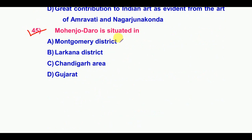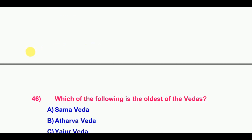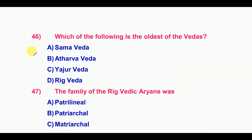Mohenjodaro is situated in which district? The answer is Larkana district. Which of the following is the oldest of the Vedas? The answer is the Rig Veda.